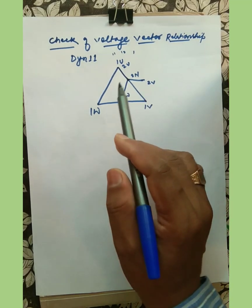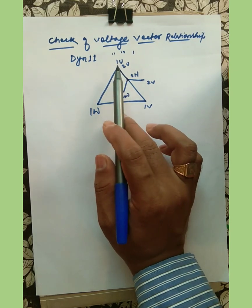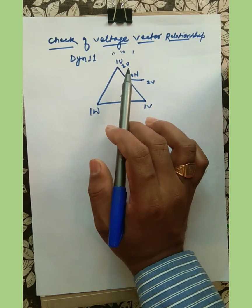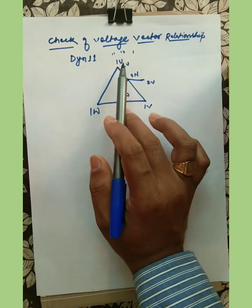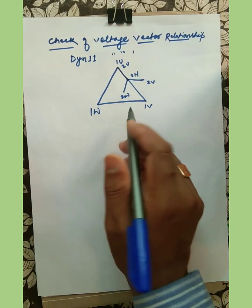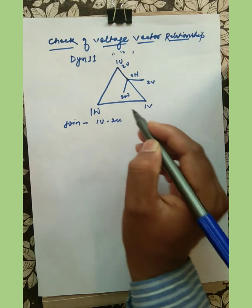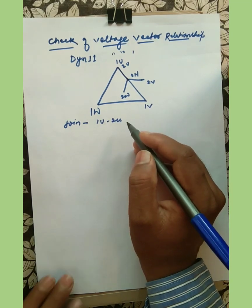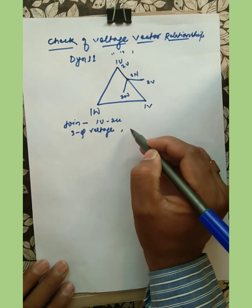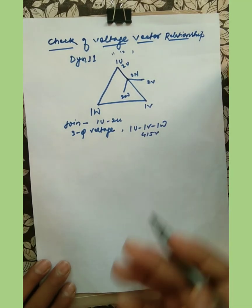In this vector relationship, 1U and 2U are connected. If we connect 1U and 2U, that means the U phase of primary and U phase of secondary — you can say R phase primary and R phase secondary — are joined. We join 1U and 2U and we apply a three-phase voltage to the primary, that means 415 volts to 1U, 1V, and 1W.